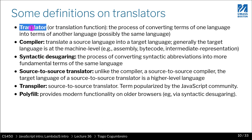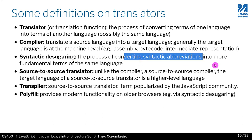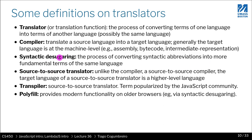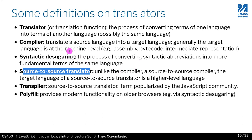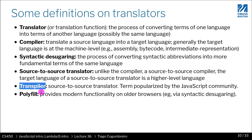Syntactic desugaring is the process of converting syntactic abbreviations into fundamental terms of the same language — you're still working on the same programming language. You can also think of it as a source-to-source translator, which is a translation function whose source and target languages are the same, usually referring to higher-level rather than machine-level languages. Transpiler is an unfortunate name popularized by the JavaScript community — it just means source-to-source translator. Please never use it.